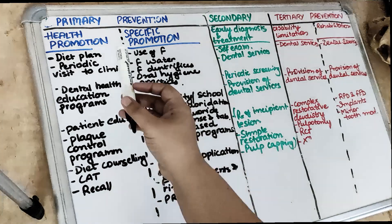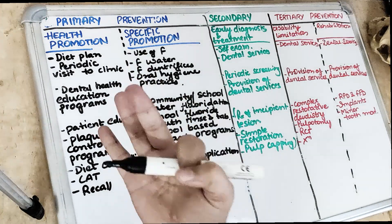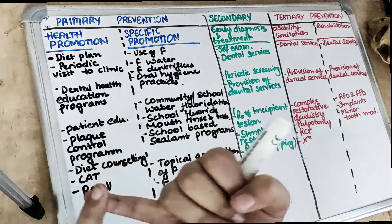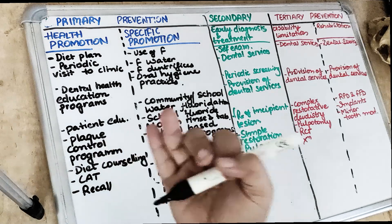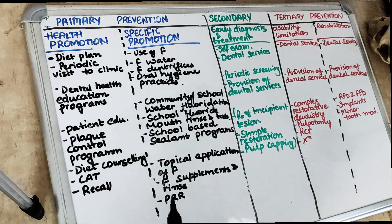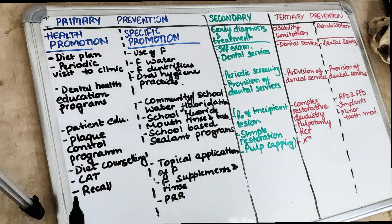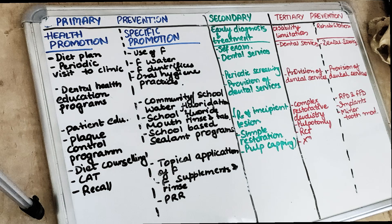Talking about primary prevention, we will discuss three preventive services: service by the individual, service by the community, and service by a dentist. Service by the individual will include diet planning, demand for any preventive service, and periodic visits to the dental clinic.